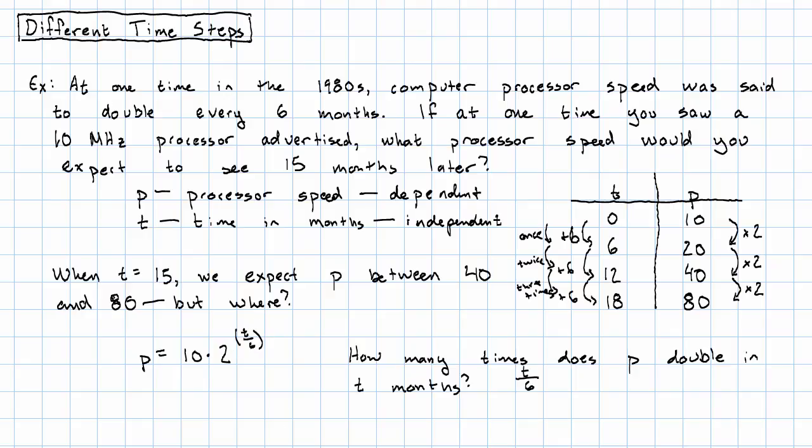Now, technically speaking, I don't need those parentheses around the exponent. The exponent itself serves to group that division, but it's a lot easier to read in this case with the parentheses there. P is 10 times 2 to the power of T over six.